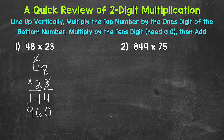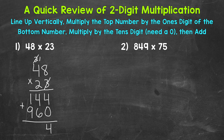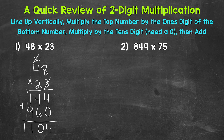Once we get to this point, we add. These two numbers — 144 and 960 — are called partial products; they're part of our final product. Starting with the ones place: four plus zero is four. Then the tens place: four plus six is 10, so we write our zero and carry our one. For the hundreds place: one plus one plus nine — that's two plus nine equals 11 — so we put our one and carry a one to the thousands place, bring it straight down, and we end up with 1,104. That's our final answer.